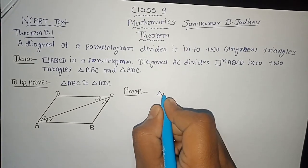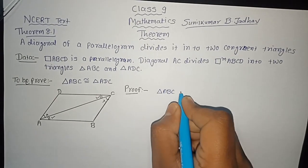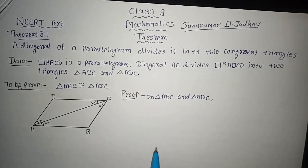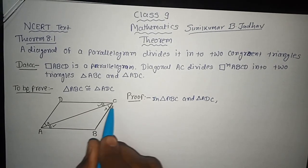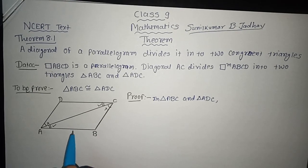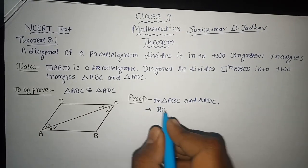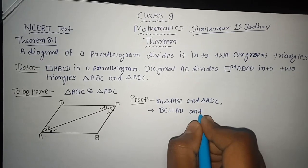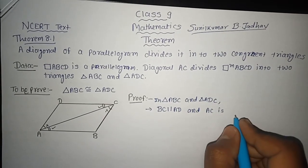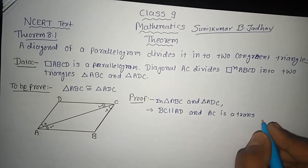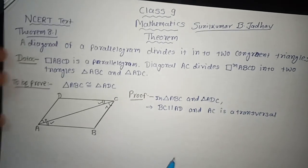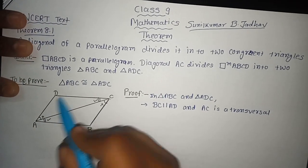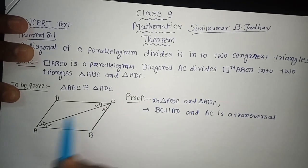Let us compare these two triangles ABC and triangle ADC and see the correspondence between them. First of all, I will consider that BC is parallel to AD and AC is a transversal. In the figure, you can see BC and AD are parallel to each other.